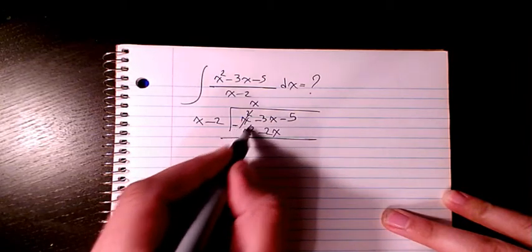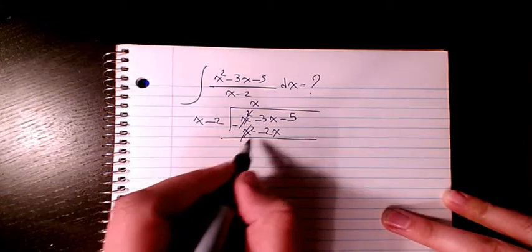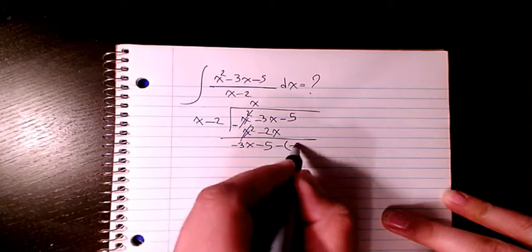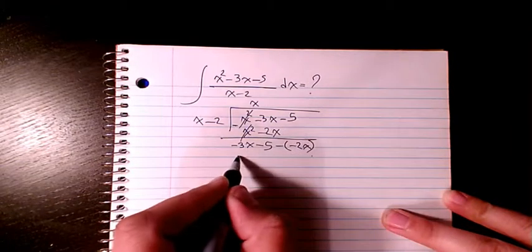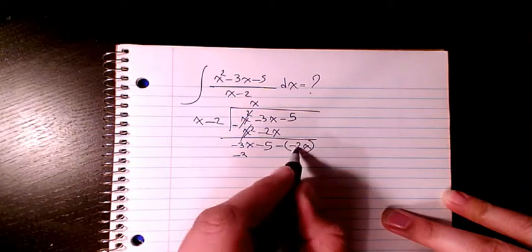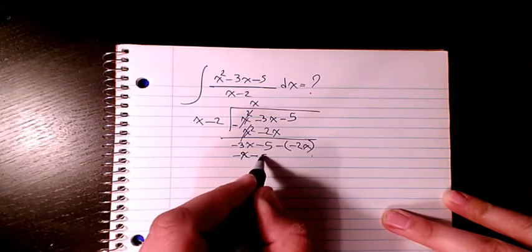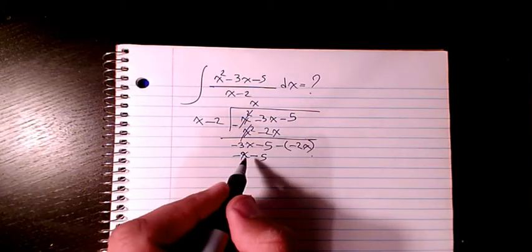And then I find the difference. These two cancel out and the remaining part is going to be negative 3x minus 5 minus negative 2x, which will be positive 2x. So it's going to be negative x minus 5.